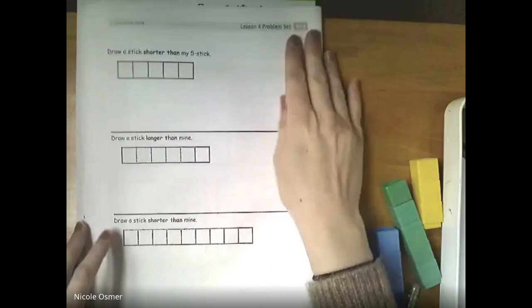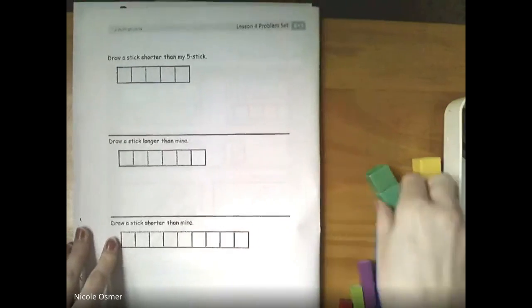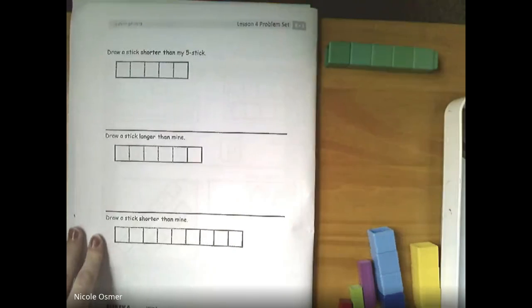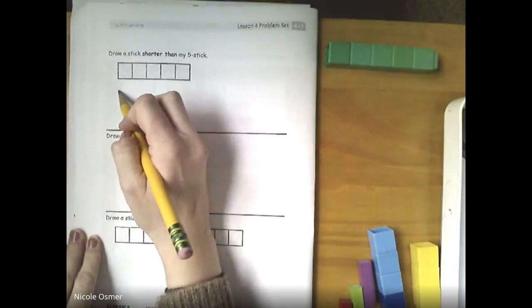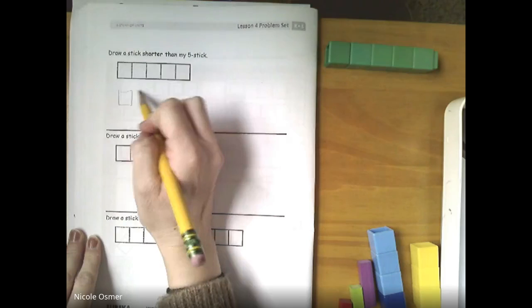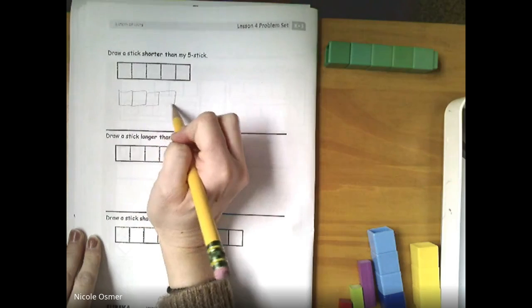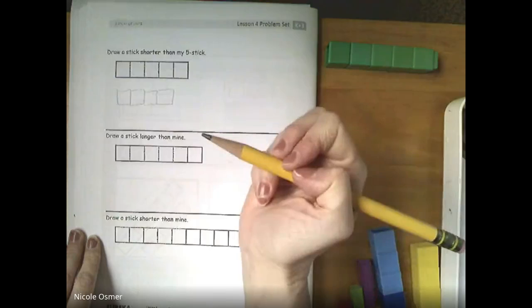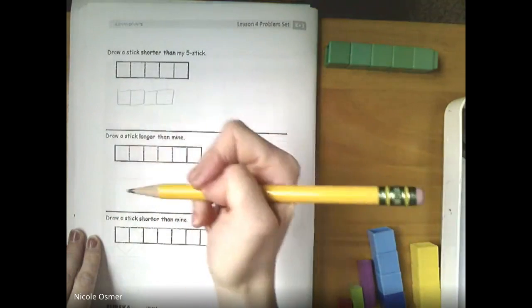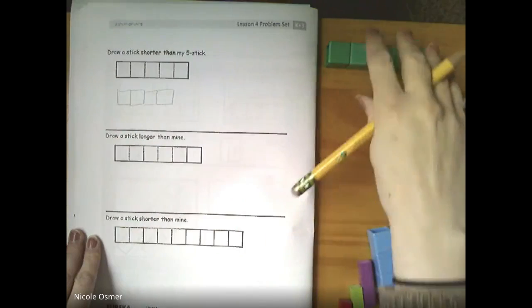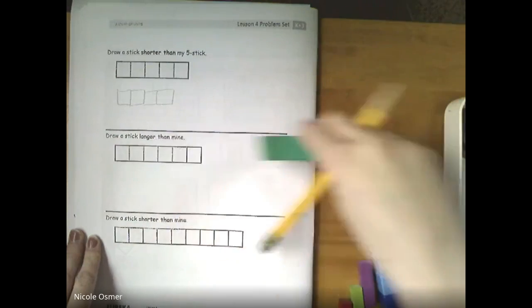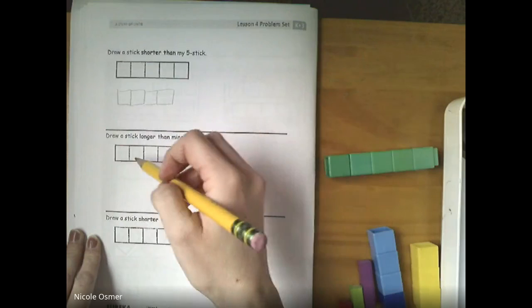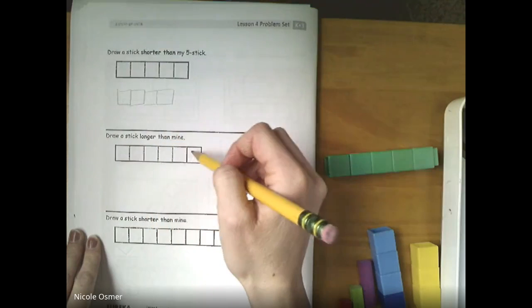You can turn that over to page 11. Now, here's our five stick drawing. We need to draw one shorter than my five stick. So make sure when you draw it, you can line up the squares and go across. I know four is shorter. I could do three, two, etc.